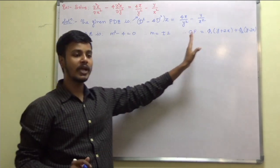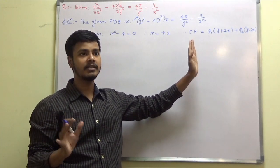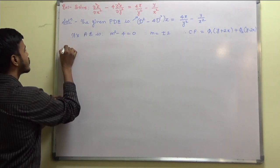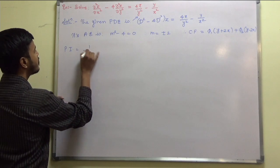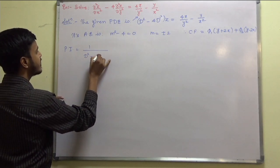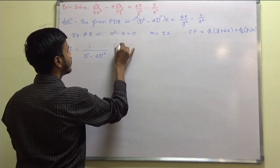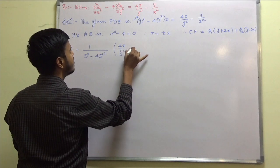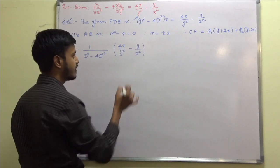These things you can do on your own because you are smart enough to now write down the complementary function. Let us see the PI. PI is 1 upon D² minus 4D'² operating on 4x/y² minus y/x².